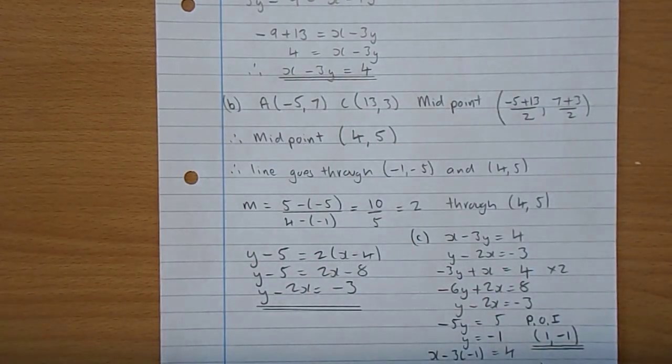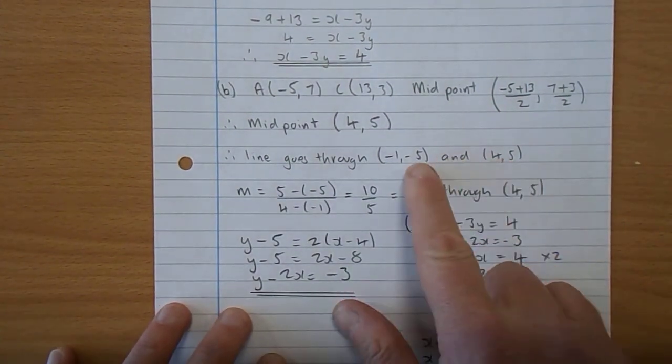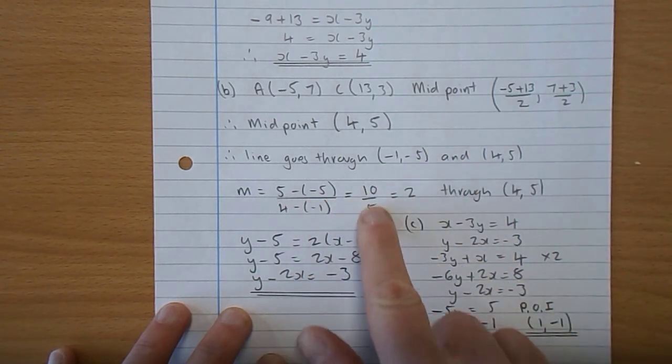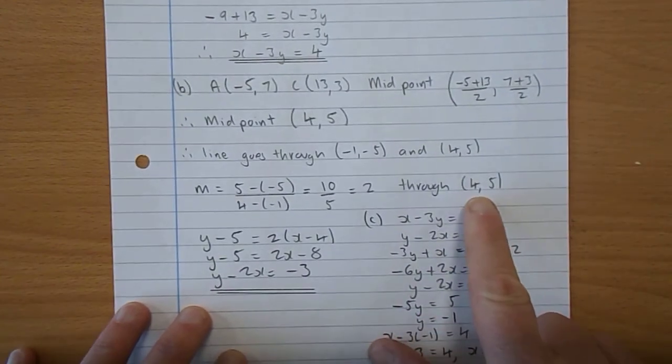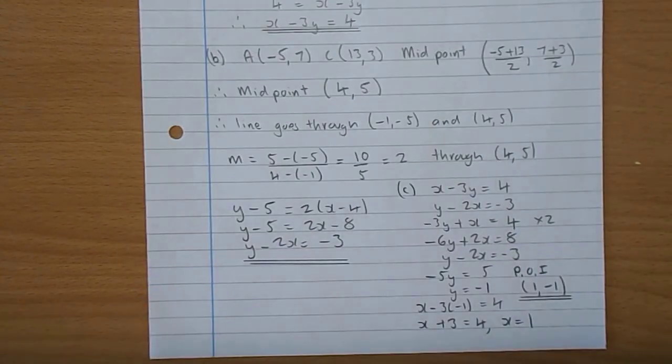So we want a line going through minus 1, minus 5 and 4, 5. So we get the gradient first. 5 take minus 5 is 10, 4 take minus 1 is 5, 10 over 5 is 2. And I picked 4, 5 as my point. So Y minus 5 is 2 times X minus 4.